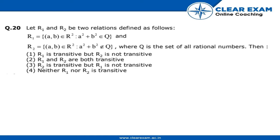Let R1 and R2 be relations defined as follows: R1 is (a,b) where a squared plus b squared belongs to Q, and R2 is equal to (a,b) belongs to R squared where a squared plus b squared does not belong to Q, where Q is the set of all rational numbers.